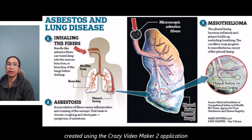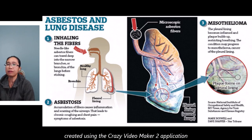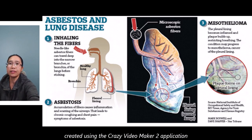Asbestos and lung disease: first, inhaling needle-like asbestos fibers allows them to travel deep into the narrow branches and bronchioles of the lungs before sticking. Second, accumulation of fibers causes inflammation and scarring of the airway, leading to chronic coughing and chest pain. The pleural lining becomes inflamed and fluid builds up, restricting breathing. The condition may progress to mesothelioma.